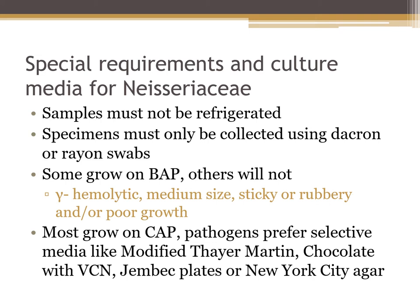Most Neisseria species do grow on chocolate agar. The pathogens prefer selective media like modified Thayer-Martin, chocolate with VCN — that's vancomycin, colistin, and nystatin — or Jembec plates, or New York City agar. These media are enriched and have high amounts of dextrose and horse hemoglobin, which will suppress gram-positive cocci, yeast, and other gram-negative diplococci and gram-negative rods.